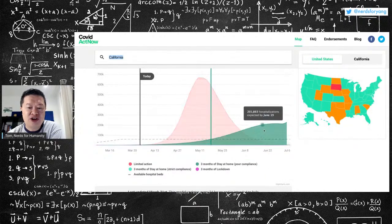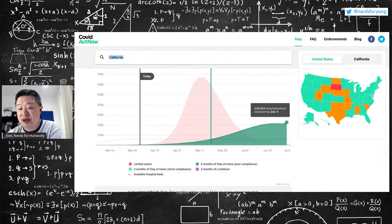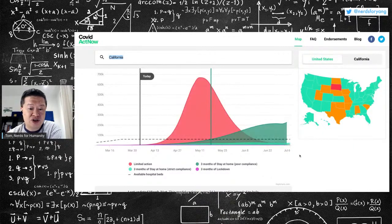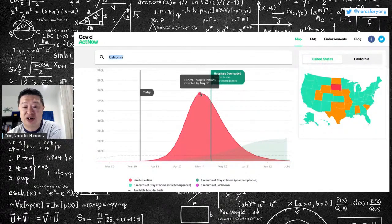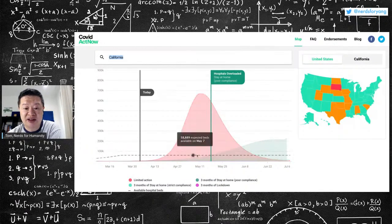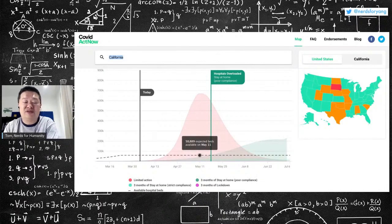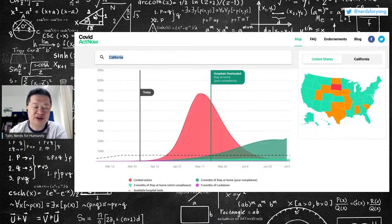Now, if they do stay-at-home and people don't comply well, they could get a peak of 226,000 hospitalizations in California versus the 58,000 beds they have. And then if they did nothing, they would be totally hosed. They would have almost 700,000 hospitalizations on May 11th compared to 58,000 beds. So they'd need ten beds for every, ten additional beds for every current bed they have, or 12 to be more precise. So that's California.